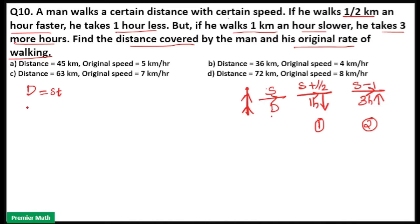Here, I will use an improved formula: speed into speed 1 into speed 2 divided by increased speed or decreased speed into time difference. In the first case, initial speed is s, final speed is s plus 1/2, increased speed is 1/2, and time difference is 1 hour less.